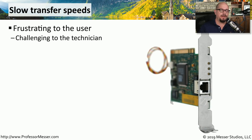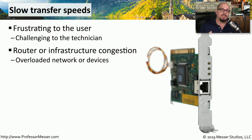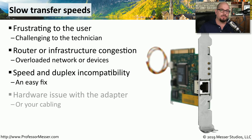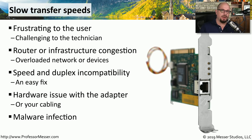Another networking problem that can be very difficult to troubleshoot is a slow network. This might be because infrastructure devices are overwhelmed — if you have an older router or switch that can't handle the load, you'll see slowdowns. A quick check is to verify the speed and duplex of your local interface; you may be running at 100 megabits instead of gigabit, or set to half duplex instead of full duplex. Also consider physical-level problems such as a bad NIC or bad cable, and sometimes malware can cause slowdowns in your operating system and network.